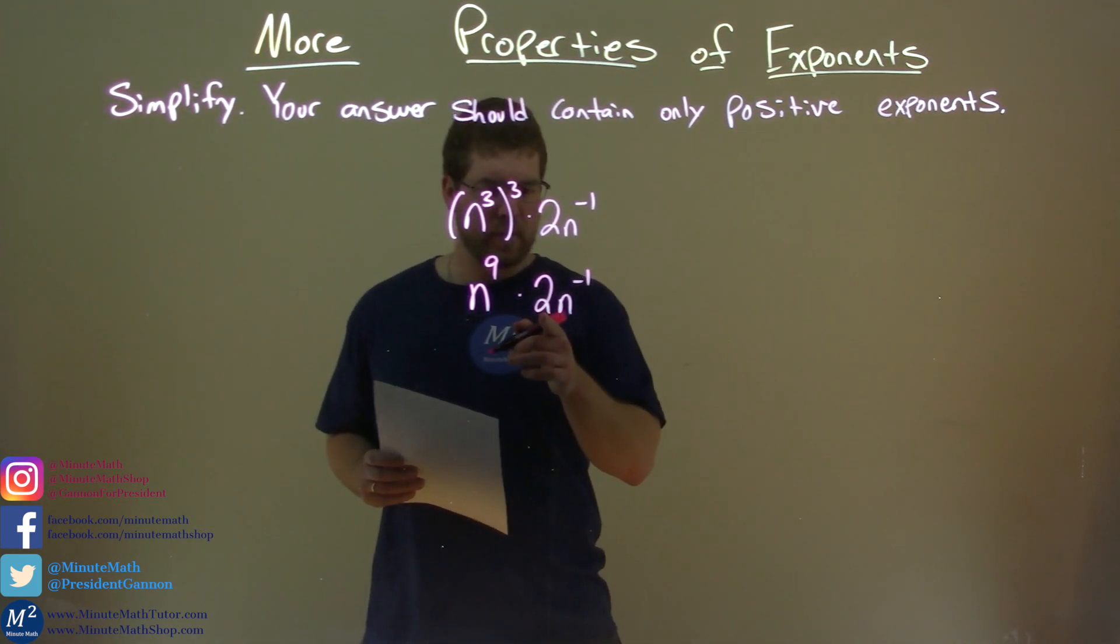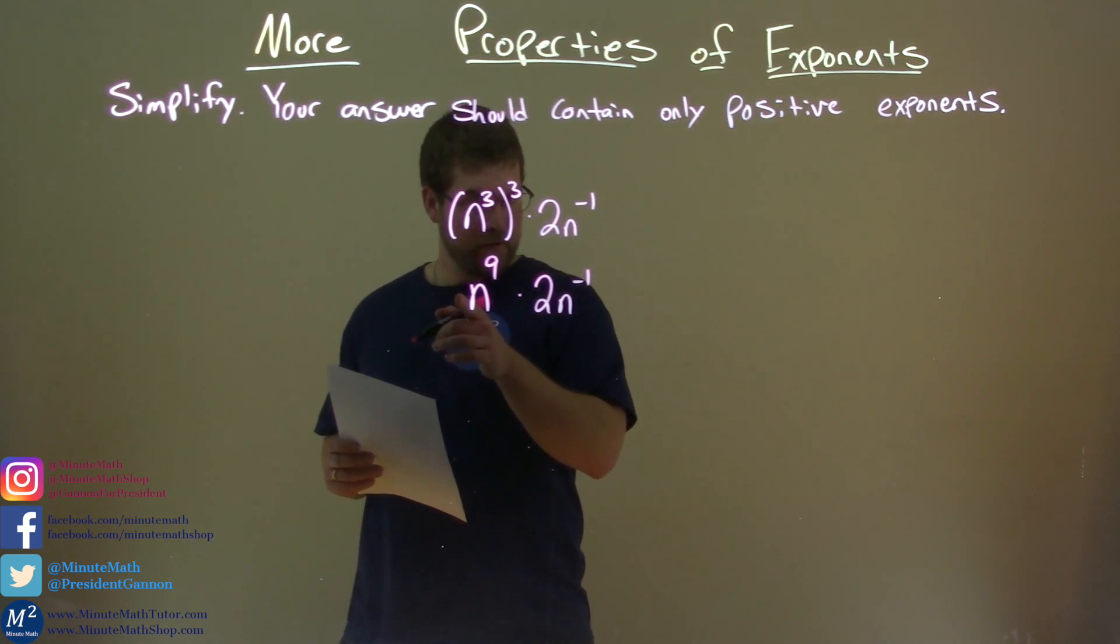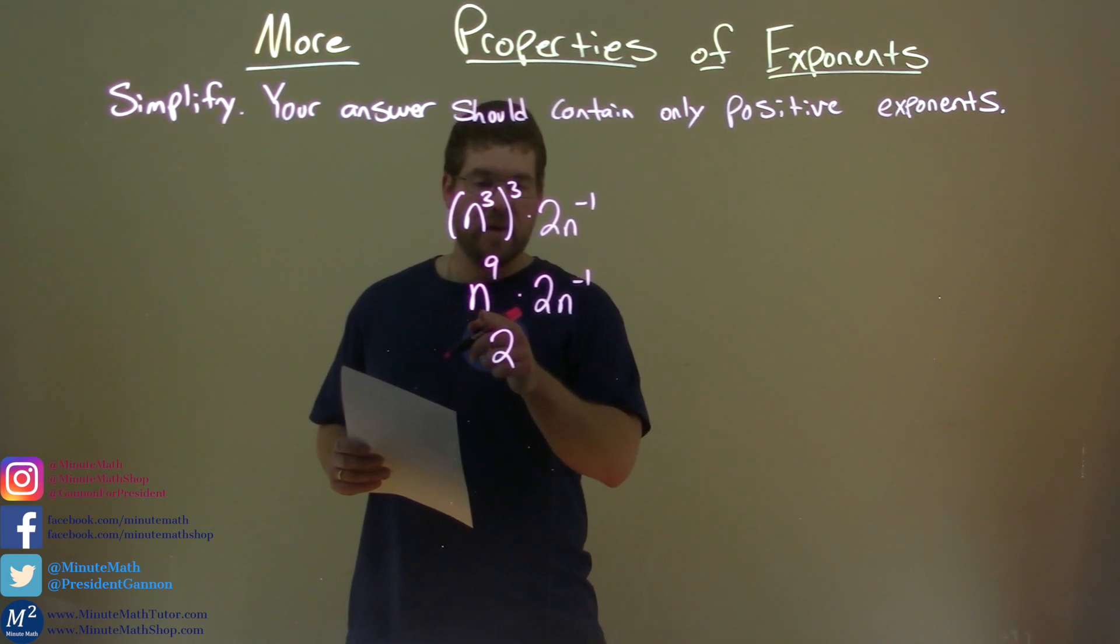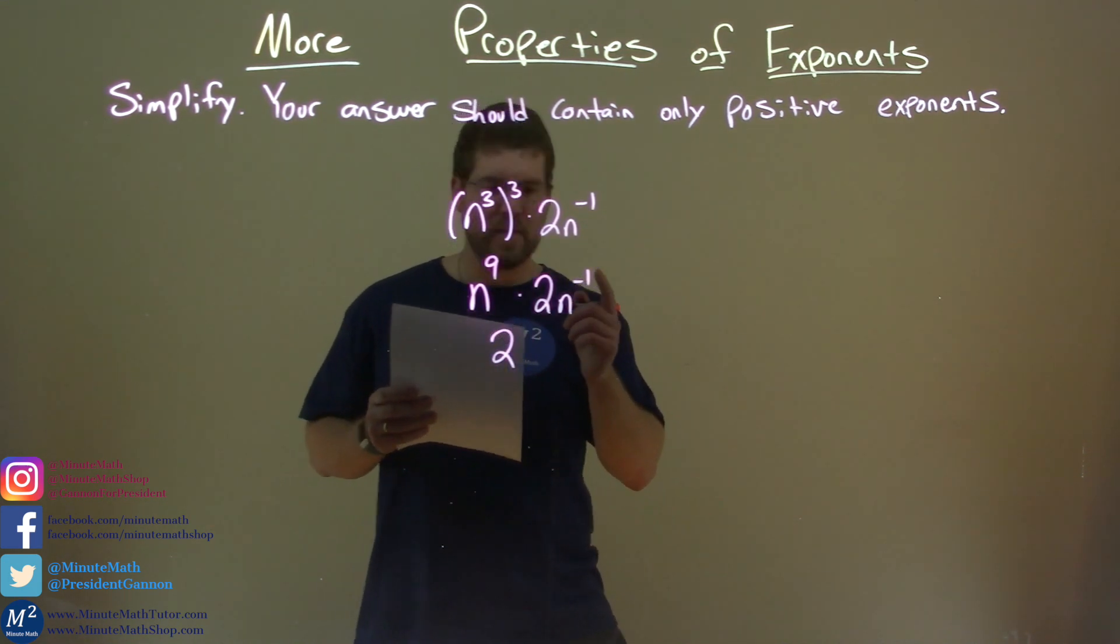Again, let's look at the coefficient. 2 times the 1 in front of this coefficient. 2 times 1 is just 2. And now we have the n's. n to the ninth power times n to the negative one power.